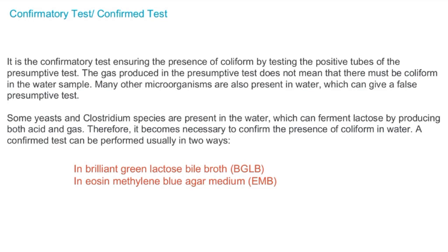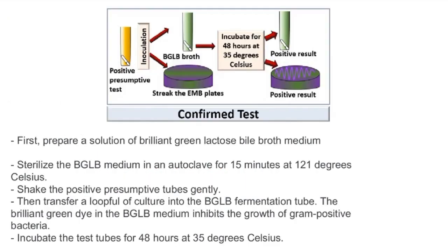In the confirmatory procedure, we prepare BGLB medium and sterilize it. From the positive presumptive tubes, we transfer a loopful of culture into a fermentation tube with BGLB.